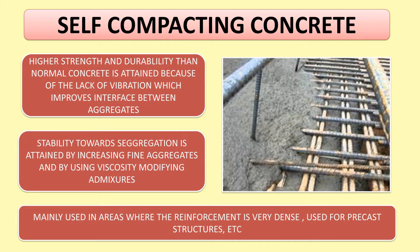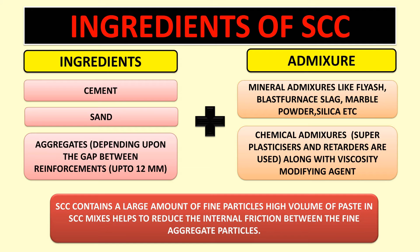Self-compacting concrete is mainly used in areas where the reinforcement is very dense, and it is also used for precast structures. Where reinforcement is very thick and normal concrete like M20 cannot be placed, in that case you can use self-compacting concrete. The aggregate size can be designed to reach all the way to the bottom through the reinforcement.